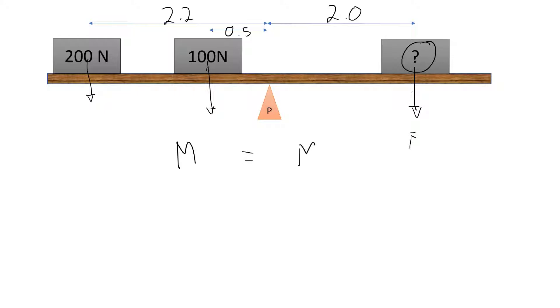So the moments on either side of the pivot must be equal. So this mystery force is helping to create a moment acting clockwise, whereas here, these two are combining to produce an anticlockwise moment.